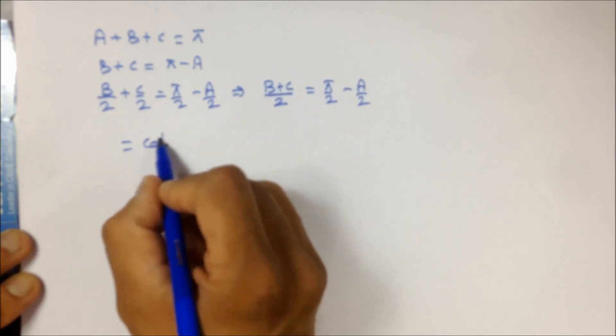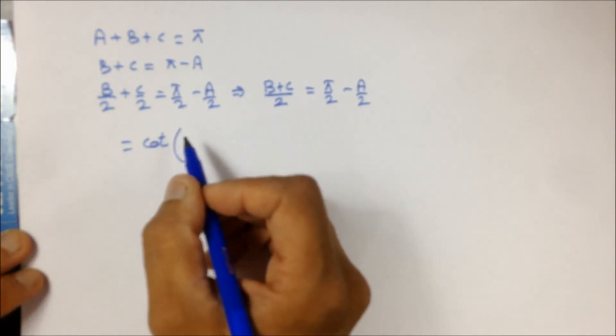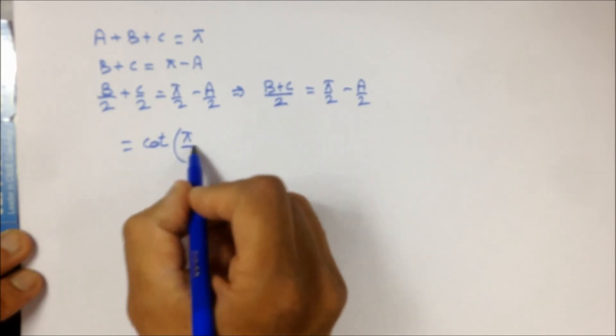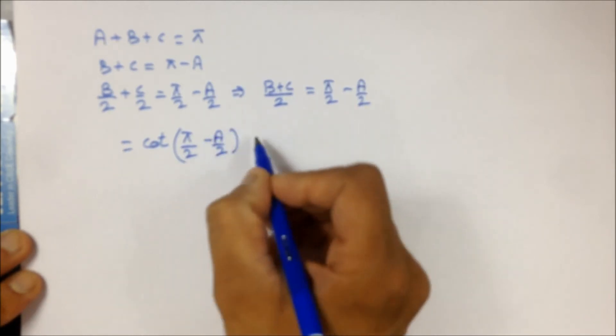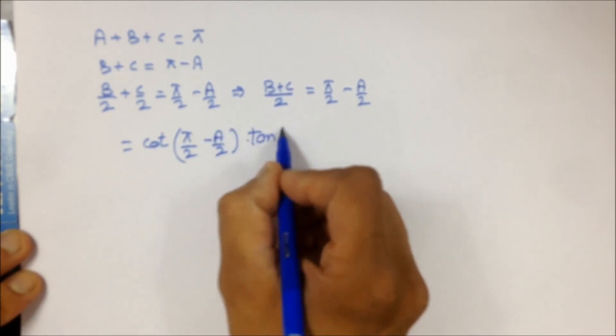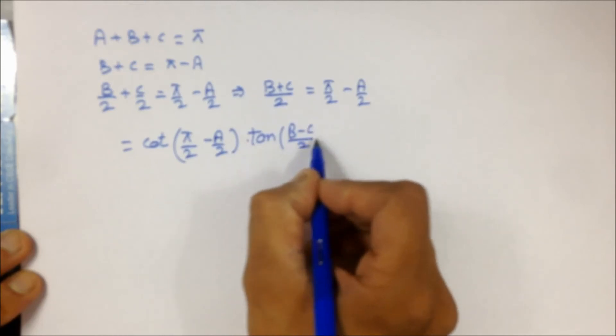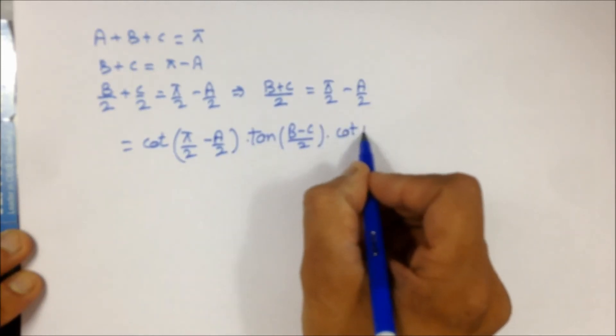In place of cot((B+C)/2), we are putting cot(π/2 - A/2), then tan((B-C)/2) as it is, with cot(A/2).